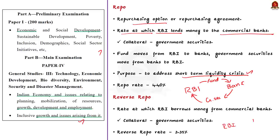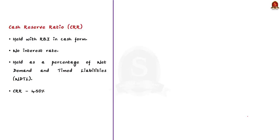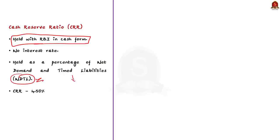Currently, the repo rate is 4.40% and the reverse repo rate is 3.35%. Regarding cash reserve ratio, banks in India are required to hold a certain proportion of their deposits with the RBI in cash form. This total deposit is the net demand and time liabilities, called NDTL. Demand liabilities include all liabilities which are payable on demand by the bank, such as savings bank deposits, current account deposits, demand drafts and unclaimed deposits.